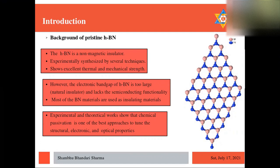Meanwhile, experimental and theoretical work shows that chemical passivation is one of the best approaches to tune the structure, electronic and optical properties and fix the large band issue of monolayer-like h-BN.